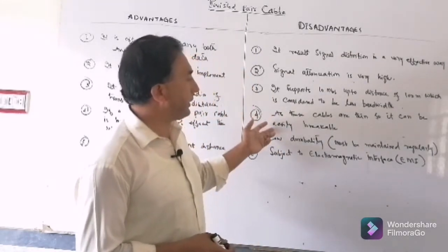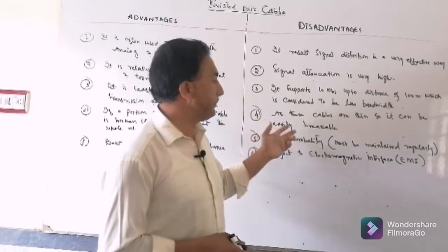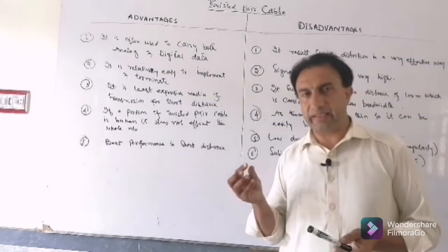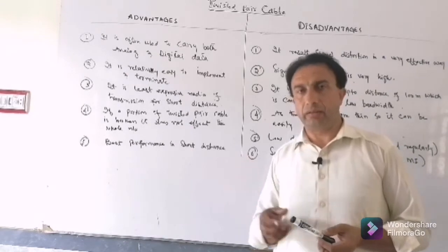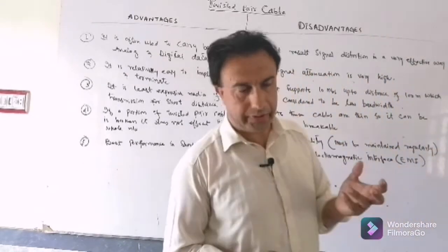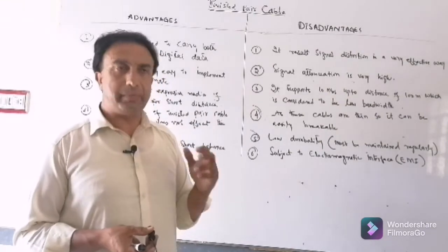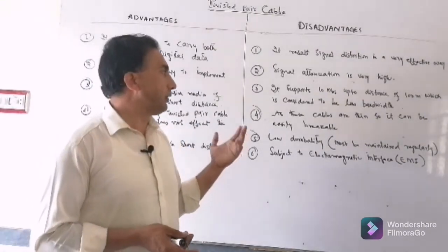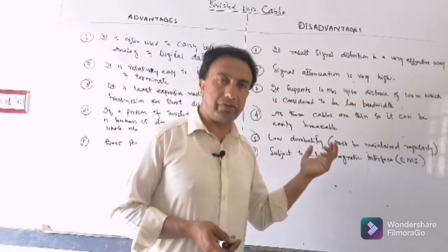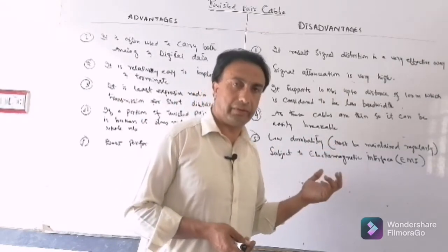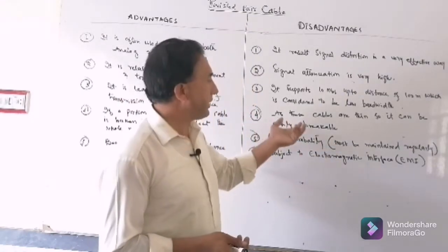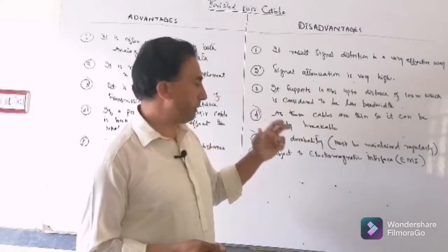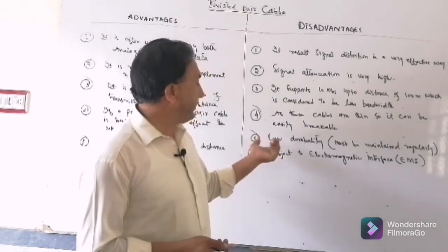The fourth disadvantage is that as these cables are very thin, they can easily break. They may be damaged with very low pressure or load because the cable surface is very thin as compared to coax and optical fiber.